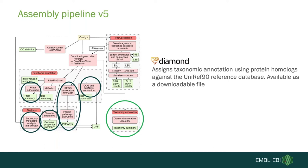Finally, for the assembly pipeline we provide DIAMOND taxonomic classification. DIAMOND works by finding homologs in your protein sequences, and the reference database we use is UniRef90 — a set of reference clusters clustered at 90% sequence identity threshold.